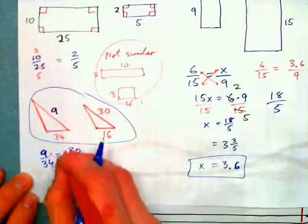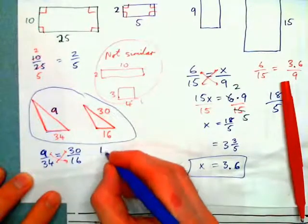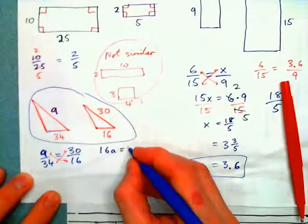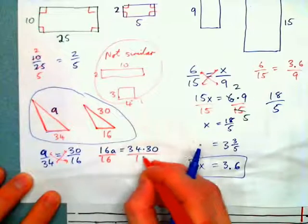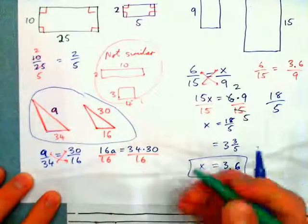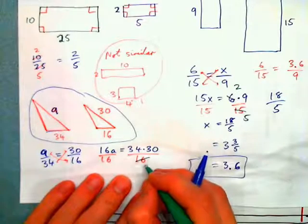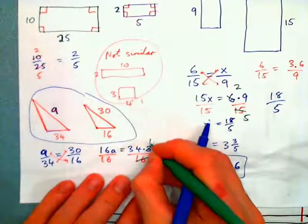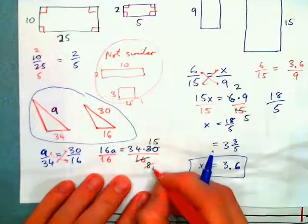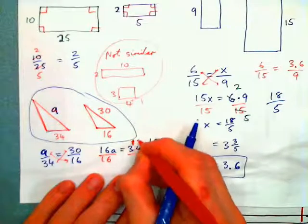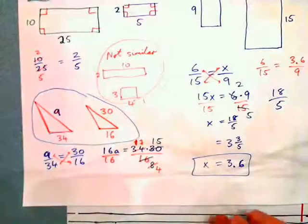Cross multiply: 16A equals 34 times 30. Then divide by 16 on both sides. Simplify: 2 into 16 goes 8 times, 2 into 30 goes 15 times, 2 into 8 goes 4 times, giving 17. So we have 17 times 15 over 4.